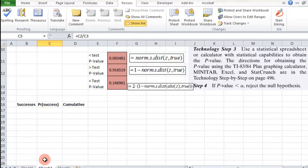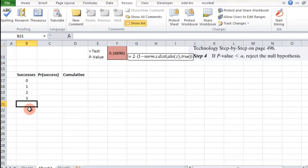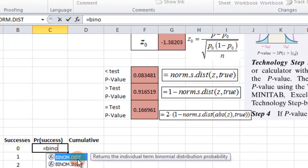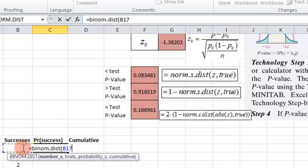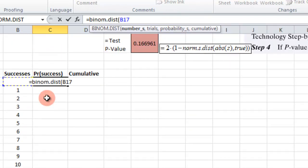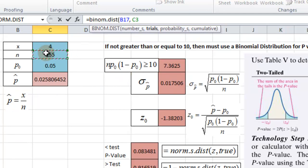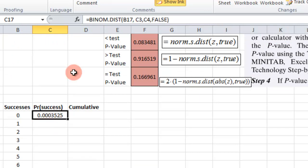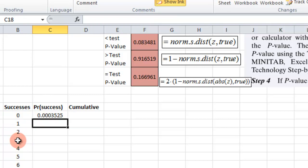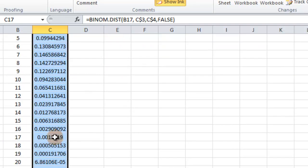So we have the number of successes, the probability of that success and the cumulative. So we start out 1, 2, 3, 4 and then fill that down for the number of successes. Then for the probability of the success it's binomial.dist. We put the number of successes in there, the number of trials which is the n, and the probability of success .05. And then cumulative we want false on this one. We need to put some dollar signs on here so that it keeps pointing. We want it to point to the trials and to the probability. Now I grab the corner after putting those in and just pull that down.